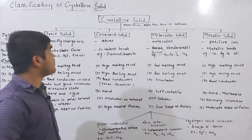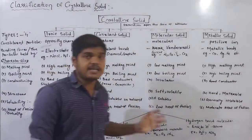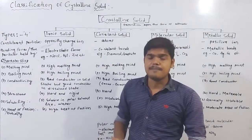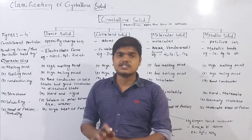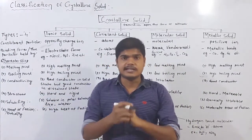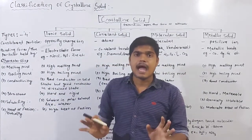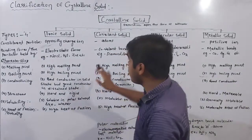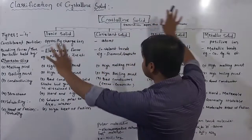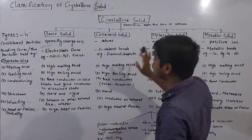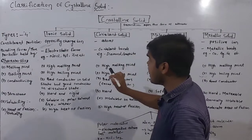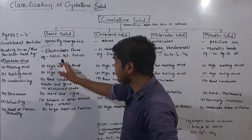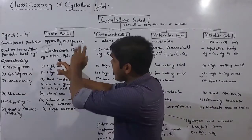So here is the overall concept of crystalline solid. The classification of crystalline solid is complete. Now let's look at examples: NaCl is ionic, diamond is covalent, N2, O2, I2, CO2 are molecular solids.